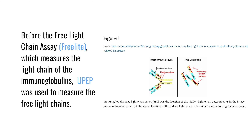Before we had free light chains as a test we could use regularly for blood, we had to rely on UPEP, because there were cases of patients who did not have any detectable S-PEP or abnormal protein in the blood, but we were finding it in the urine because that's where it was being concentrated.